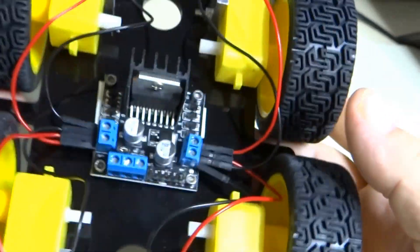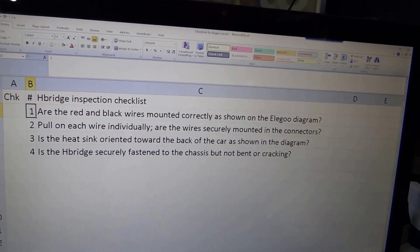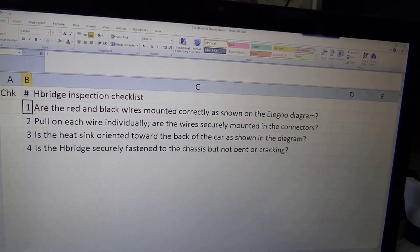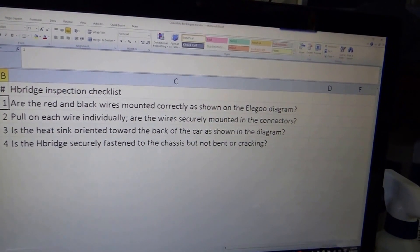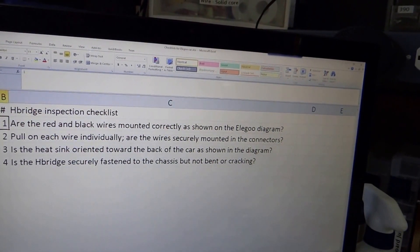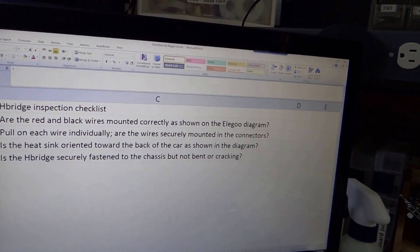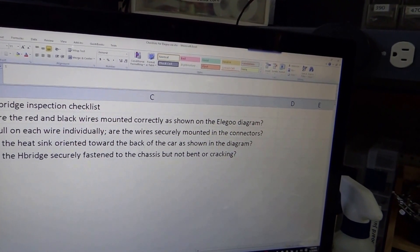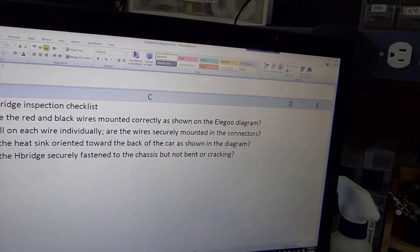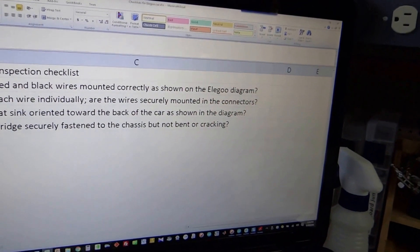Alright, I think we're ready to move to the next step. Here is the H-bridge checklist. We're going to make sure the black and red wires are correctly wired. We're going to make sure that they're fastened securely in their connector. Make sure the heatsink is oriented correctly and the H-bridge is securely fastened but not broken.